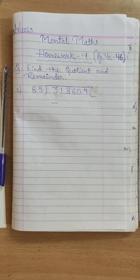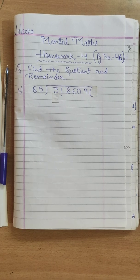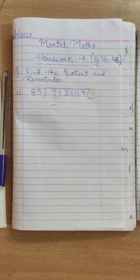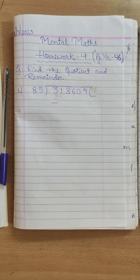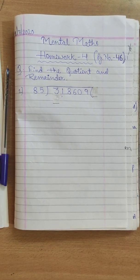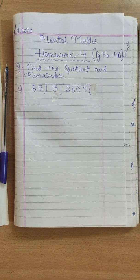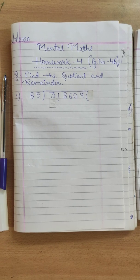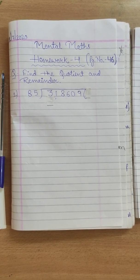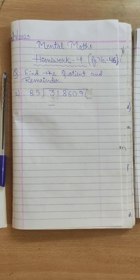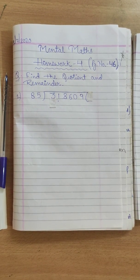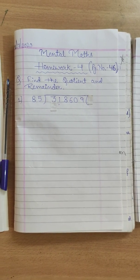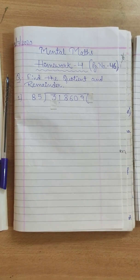So I hope you have solved this first question or if you are not going to understand how to solve, I will help you out in solving this question. As you can see, the divisor is given 85 and the dividend is given 3,18,609. So we need to divide the given dividend by the divisor 85. But now the question arises, do you know the table of 85? Because if we know the table of 85, then only we will be able to divide it.